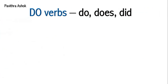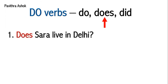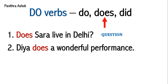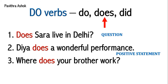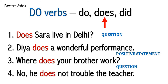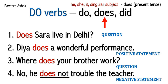Next we'll understand do verbs: 'does'. 'Does Sarah live in Delhi?' — it's a question. 'Dia does a wonderful performance.' — it's a positive statement. 'Where does your brother work?' — that's a question. 'He does not trouble the teacher.' — does not — it's a negative statement. I have already told you, we use 'does' for he, she, it, and singular subject.